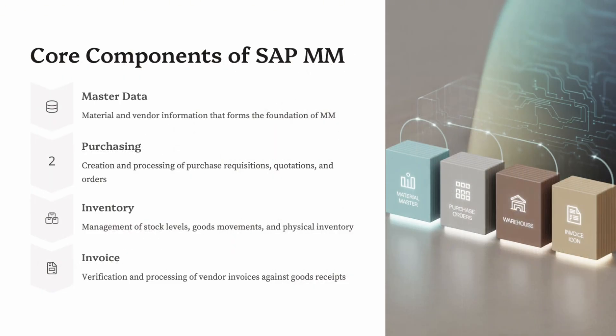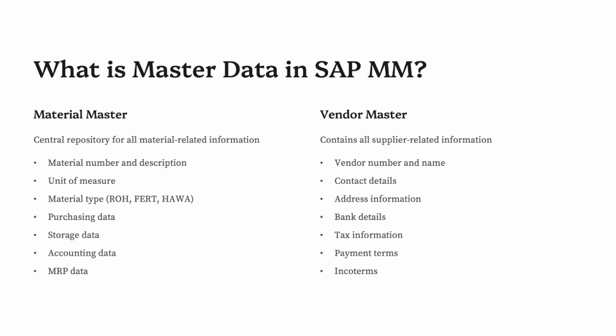Section 2: Key Components of SAP MM. SAP MM is made up of several interconnected components. First, Master Data: the core information used throughout the module, referenced in every transaction. The Material Master describes every product or service a company procures, stores, or sells — containing details like unit of measure, material type, valuation class, and MRP settings. The Vendor Master contains all information about external suppliers such as address, bank details, payment terms, and purchasing data. The Purchasing Info Record links material and vendor data together, storing data like last purchase price, delivery times, and standard conditions.